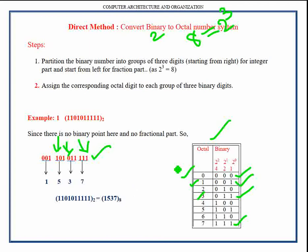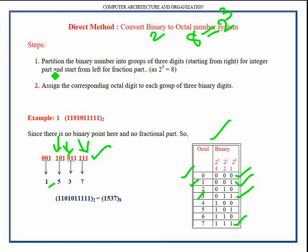Applying octal values to each group: the group containing triple one has octal value seven; the group containing zero-one-one has octal value three; the group containing one-zero-one has octal value five; and the group containing zero-zero-one has octal value one. We have now converted the given binary number into octal form.